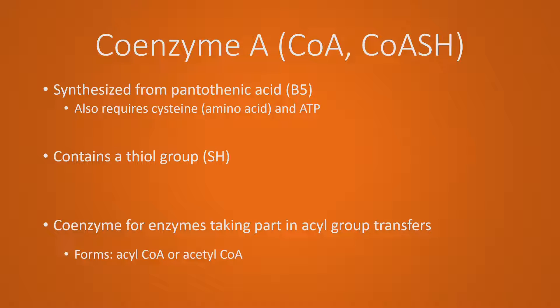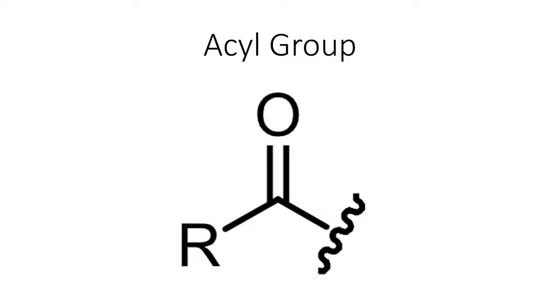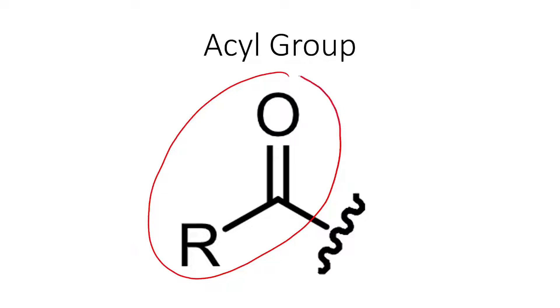Like its name suggests, coenzyme A is a coenzyme. Coenzymes help enzymes catalyze specific reactions. In the case of coenzyme A, that specific reaction is acyl group transfers. As our CoA is helping with the acyl group transfers, it's known as either an acyl-CoA or an acetyl-CoA. So the million dollar question is, what is an acyl group? This here is an acyl group, and as you can see, the acyl group here is attached to just a random compound that we don't really care about.